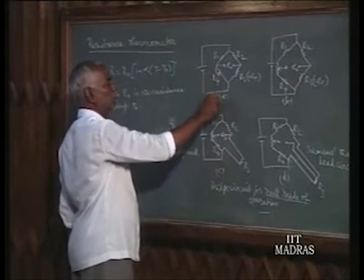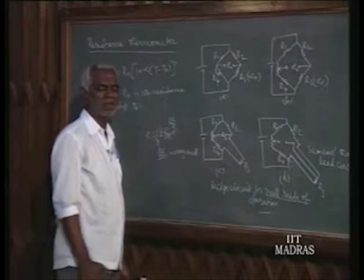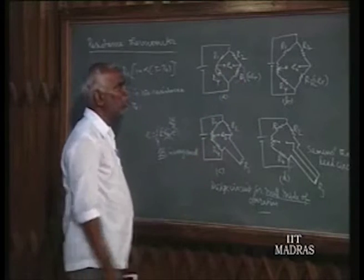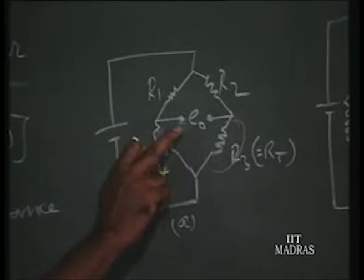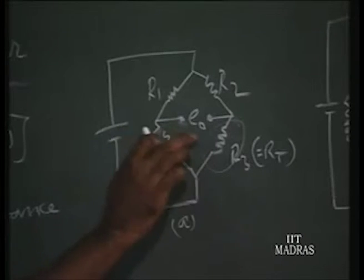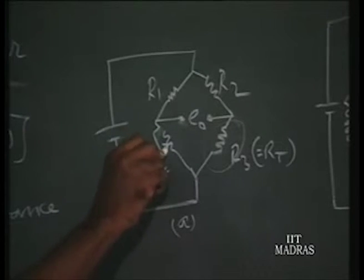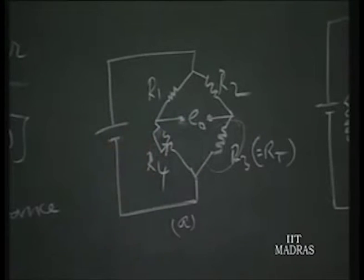In null mode, there are 4 resistances, and R3 is the resistance of the thermometer which is subjected to different temperatures. When originally we balance it to zero and when we subject it to any temperature, some imbalance voltage will develop. To bring it to zero, we adjust R4 so that the output voltage E0 is brought to 0. How much adjustment is required in R4 to bring the balance back is the null mode of operation — the amount of change required is a measure of the temperature.